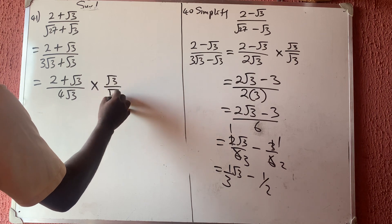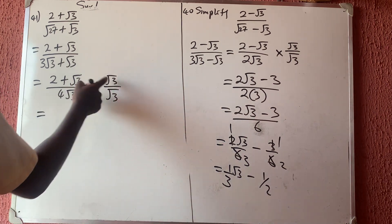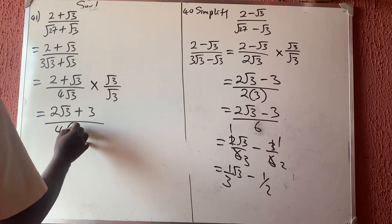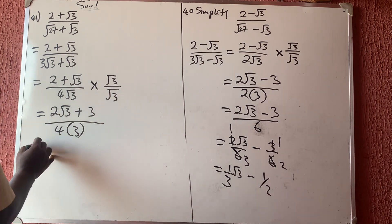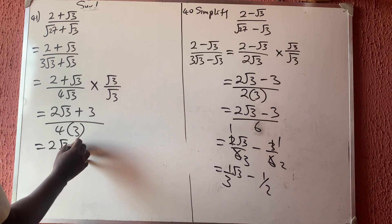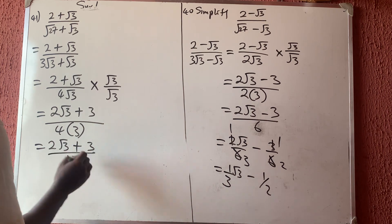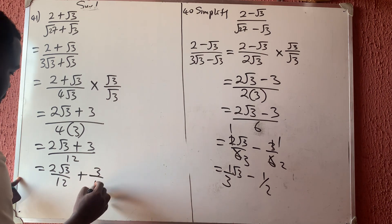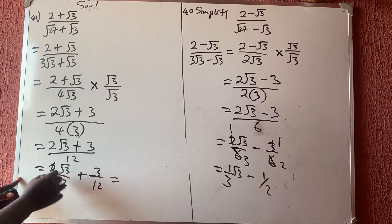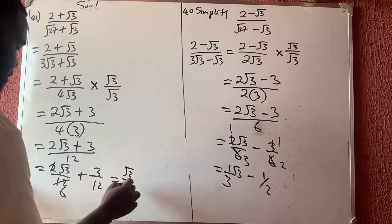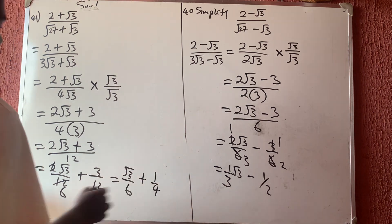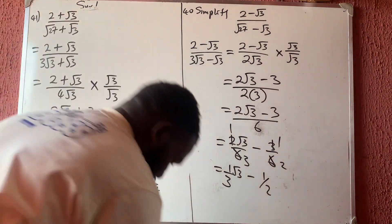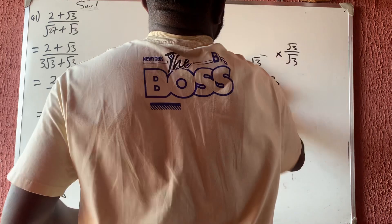Multiplying by √3 over √3: the numerator gives 2√3 plus ordinary 3, and the denominator gives 4 times 3 equals 12. Splitting: 2√3 over 12 plus 3 over 12. Simplifying: 2√3 over 12 gives √3 over 6, and 3 over 12 gives 1 over 4. So the answer is √3 over 6 plus 1 over 4.